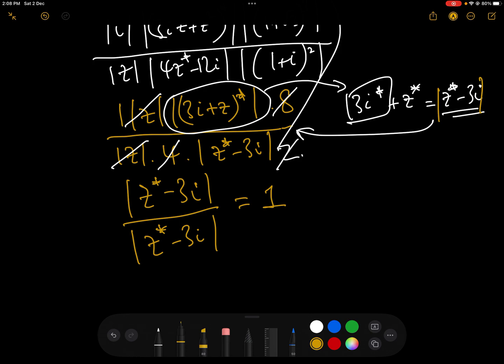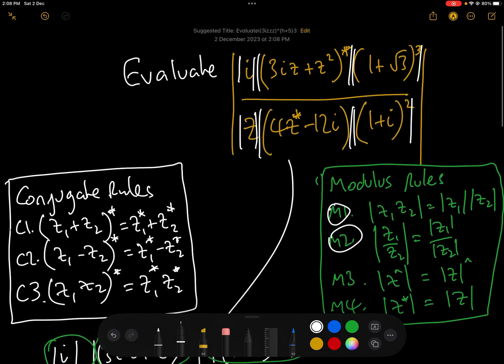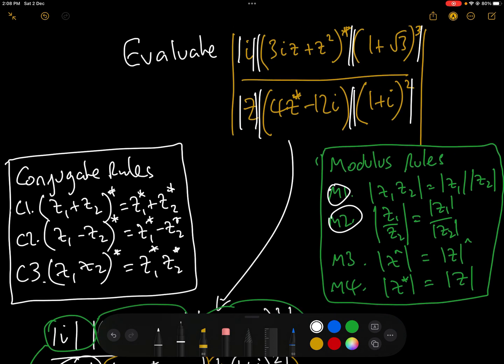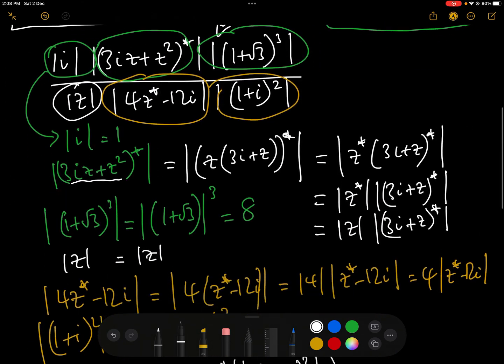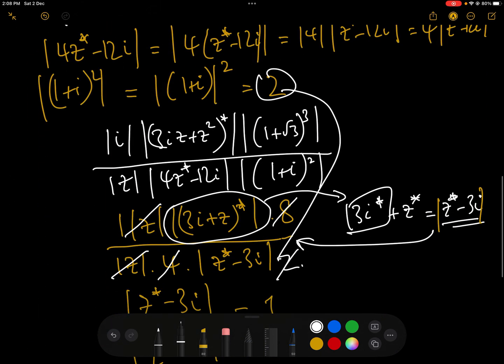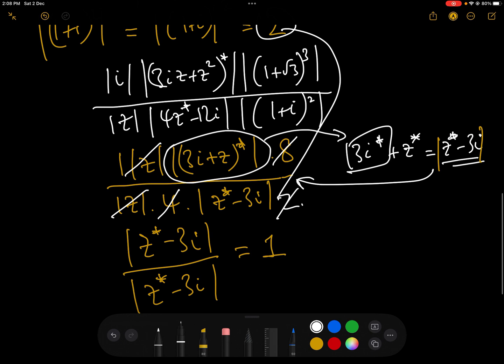So the answer to the question is 1. So by splitting the question from this rather horrific expression into the six constituents by the modulus rules, and then evaluating each one of them one by one, most of them cancel out, and the only one that doesn't is z conjugate minus 3i, which is on the top and the bottom, which then cancels out and leaves us with the answer 1.